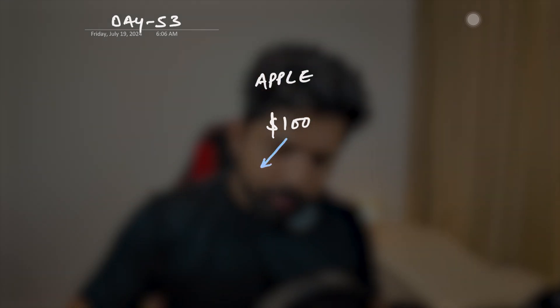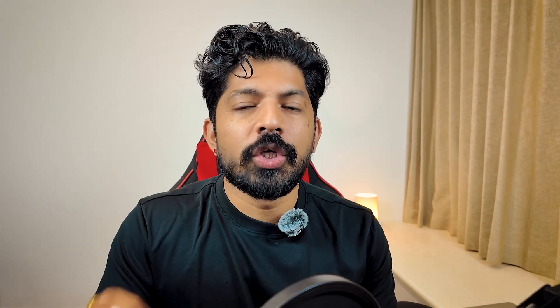First, let's understand what probability is. Probability is the likelihood of any future events. When we talk about trading, let's say stock Apple is currently trading at $100. Now there are only two possibilities: either it will go down, let's say to $90, or it will go up, let's say to $110. We can say there is a 50% chance of going up and a 50% chance of going down.